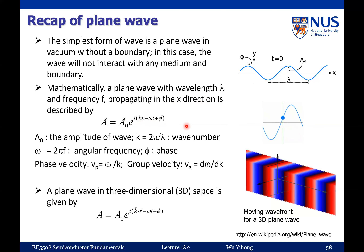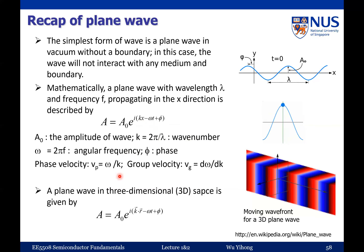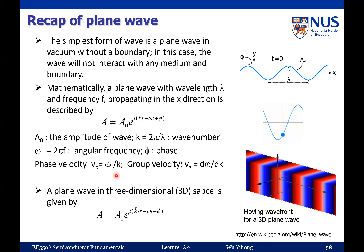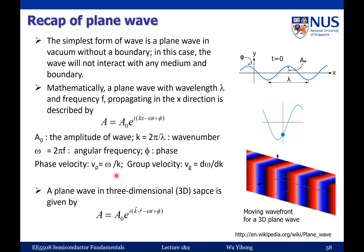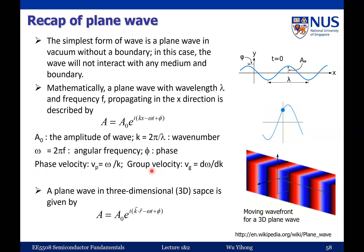The wave number k and angular frequency ω are both important. The ratio ω/k is extremely important because it tells you how fast the wave can move — one quantity describes change in the spatial domain and the other describes change in time. The ratio determines how fast the wave propagates in space.